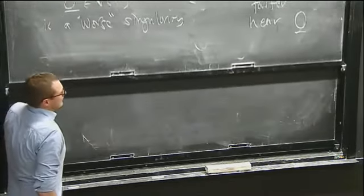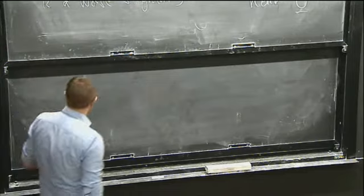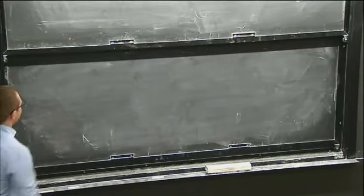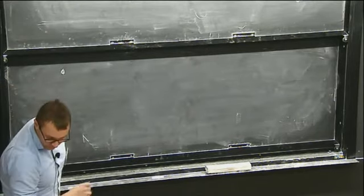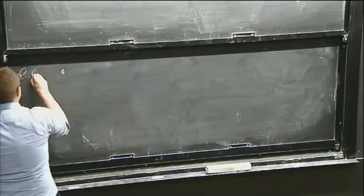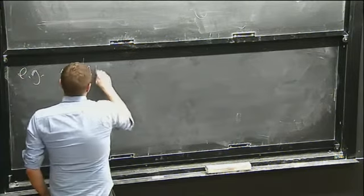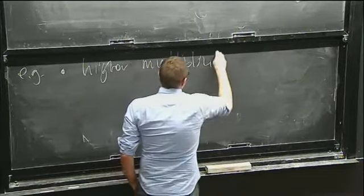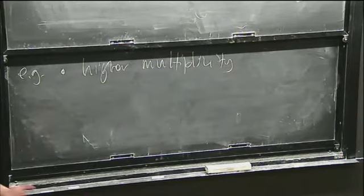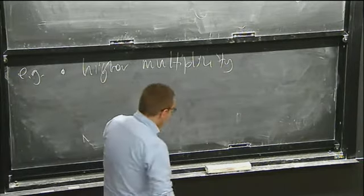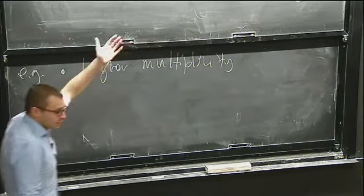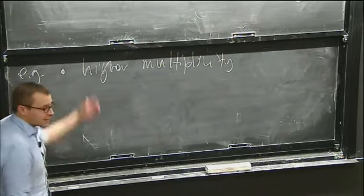In the last talk, we saw two examples of this. First, if f has higher multiplicity — so the lowest order terms that show up in f all have larger degree monomials — then it's vanishing like a product of things that are vanishing, so it's vanishing faster, and so that's a worse singularity.